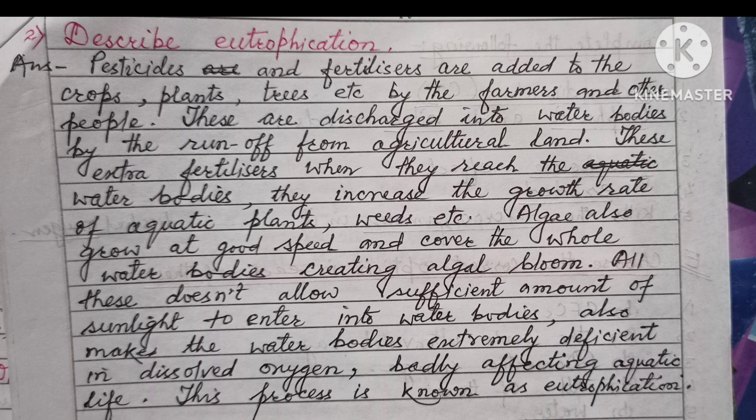Question 2: Describe Eutrophication. Answer: Pesticides and fertilizers are added to crops, plants, and trees by farmers and other people. These are discharged into water bodies by runoff from agricultural land. These extra fertilizers, when they reach the water bodies, increase the growth rate of aquatic plants and weeds. Algae also grow rapidly and cover the whole water body, creating algal bloom. All these do not allow sufficient sunlight to enter into water bodies, and also make the water bodies extremely deficient in dissolved oxygen, badly affecting aquatic life. This process is known as Eutrophication.